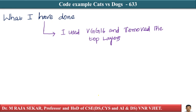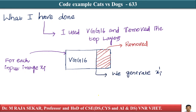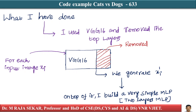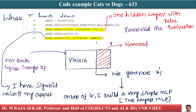In the previous lecture, I used VGG16 and removed the top layers. For each input image xi, I generated xi dash. On top of it I build a very simple multi-layer perceptron — a two-layer MLP. I have a dense layer, and again model dot add dense.